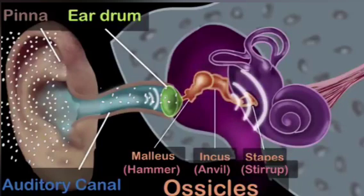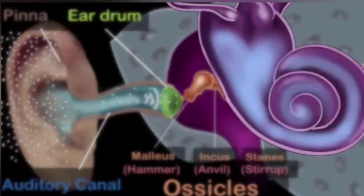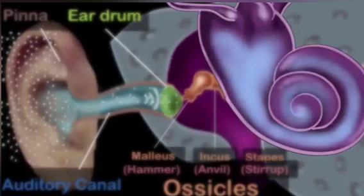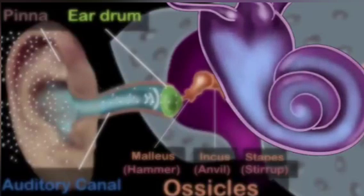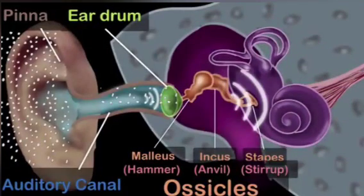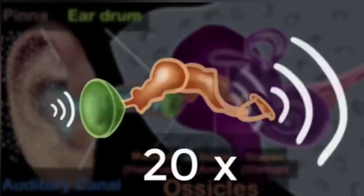But why do we need to increase the pressure of the sound waves? Because the inner ear consists of a liquid, not air. The vibrations must transfer into a liquid, and moving particles of liquid is much harder than moving particles of air — just as it's easy to swing your arms in air, but pretty difficult inside water, like in a swimming pool. So to set this liquid in vibration, the pressure has to be high enough. In fact, our ossicles increase the pressure of the sound about 20 times.